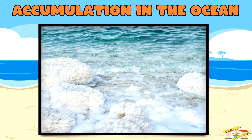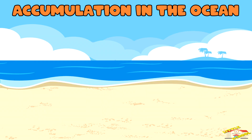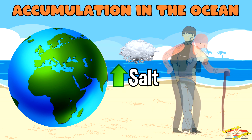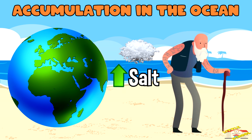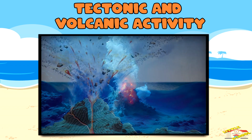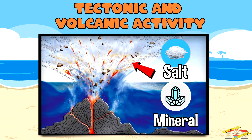Accumulation in the ocean: salts build up in the ocean because water evaporates during the water cycle, leaving the salts behind. Over millions of years, this process has led to the ocean's high salinity.